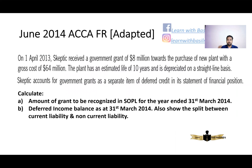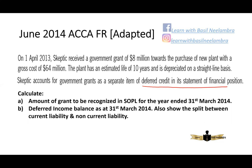To understand this better, let's do a problem from the ACCA Financial Reporting past paper, June 2014. On 1st April 2013, Skeptic received a government grant of $8 million towards the purchase of a new plant with a gross cost of $64 million. The plant has an estimated life of 10 years and is depreciated on a straight-line basis. Skeptic accounts for the government grant as a separate item of deferred credit — so the question clearly states that Skeptic is using method number 2.